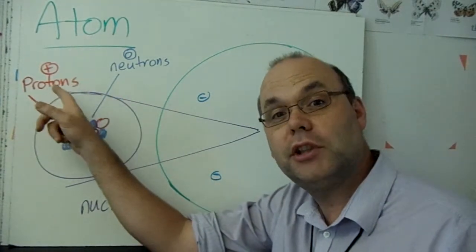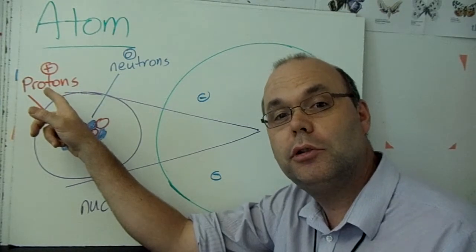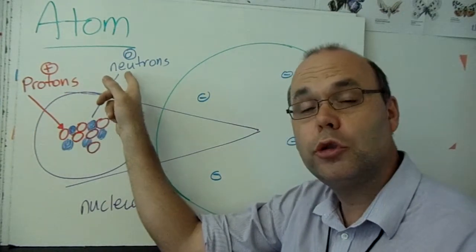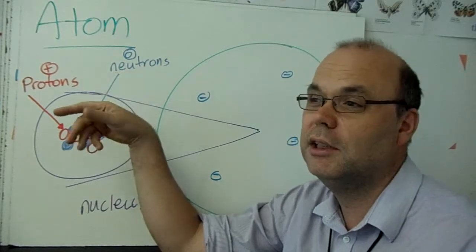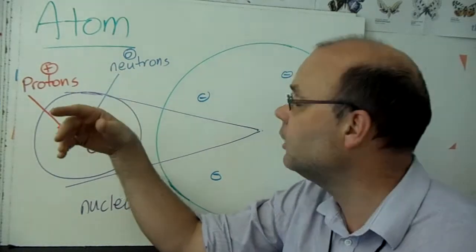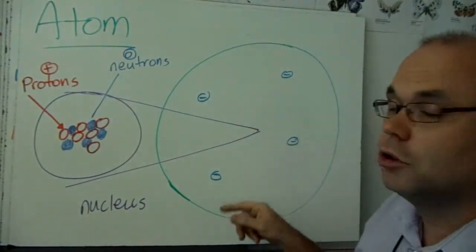Protons are positive. Protons are positive. Neutrons are neutral. That means they're not positive and they're not negative. The electrons are negative.